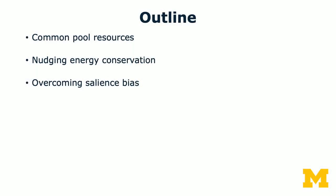Hi everyone, so we're going to start a new topic this week. We'll talk about common pool resources and energy conservation. This is the outline of this week's talk. We'll first review what common pool resources are, then go through different ways of nudging energy conservation. Then we'll talk about a study that overcomes salience bias, and discuss what salience bias is before going into the details of the study.